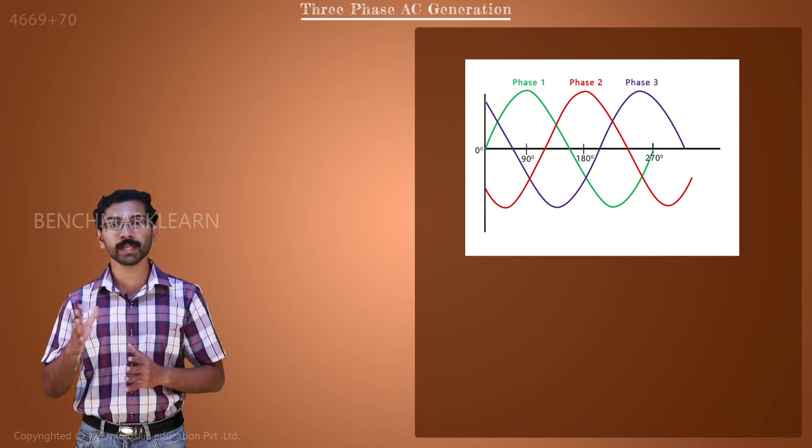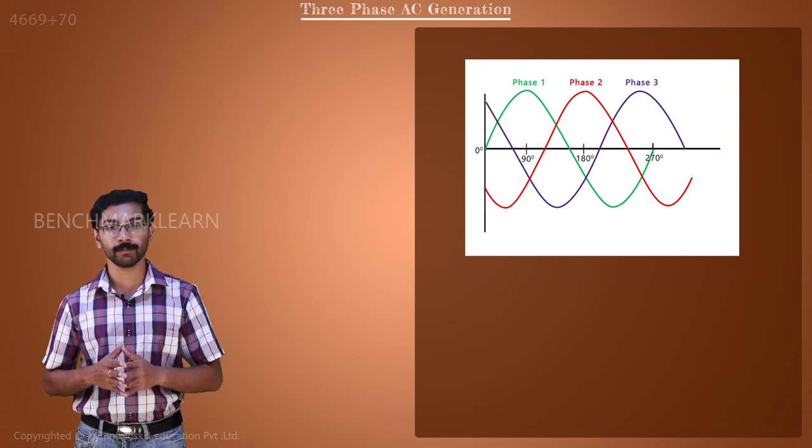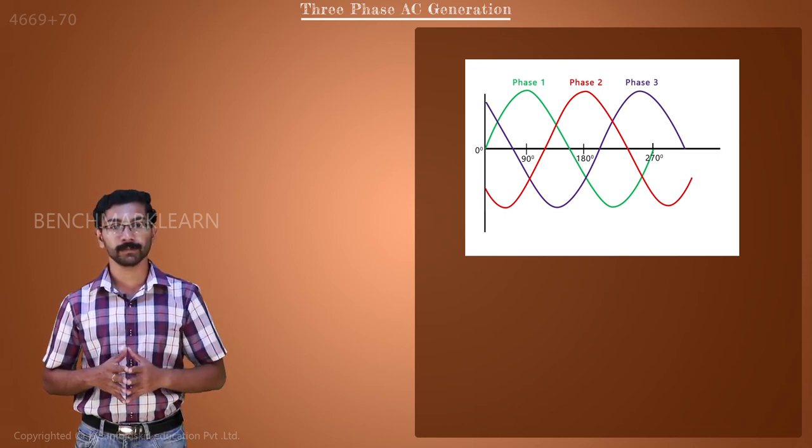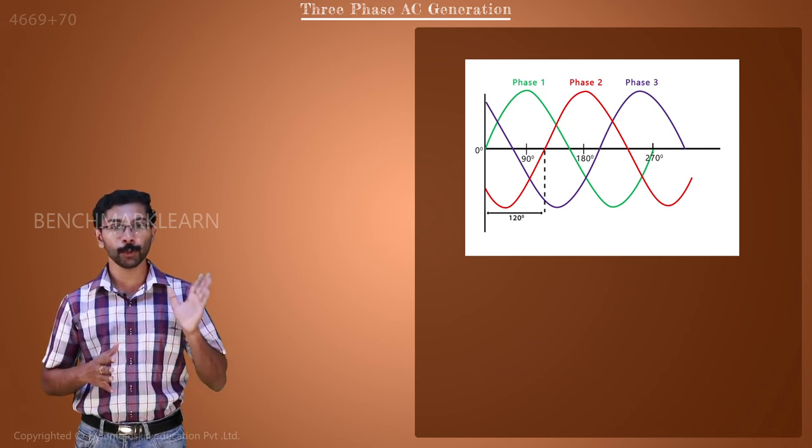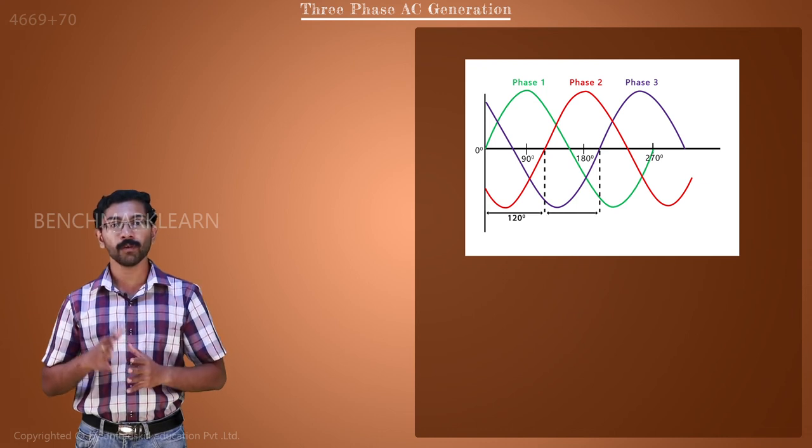So, the three sine waves are 120 degrees out of phase with each other, like this. Here, phase 2 lags phase 1 by 120 degrees and phase 3 lags phase 2 by 120 degrees.